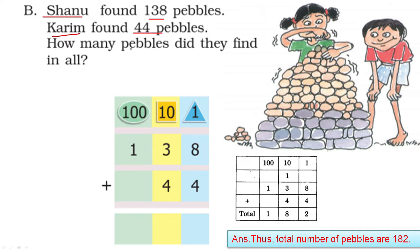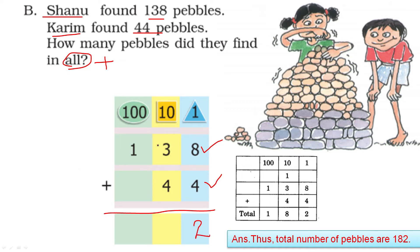How many bubbles did they find in all? In all means we have to add. So 138 plus 44. 8 and 4 make 12 — 1 carry. 4 plus 3 plus 1 is 8. So 182. The total number of bubbles is 182.